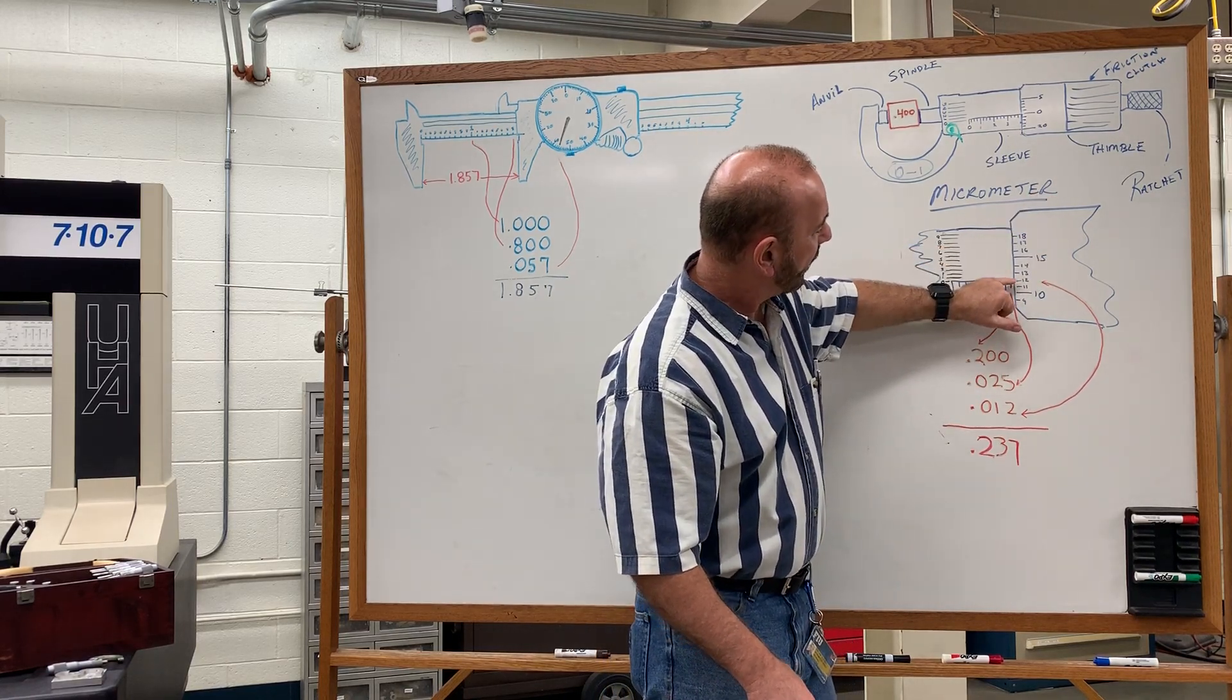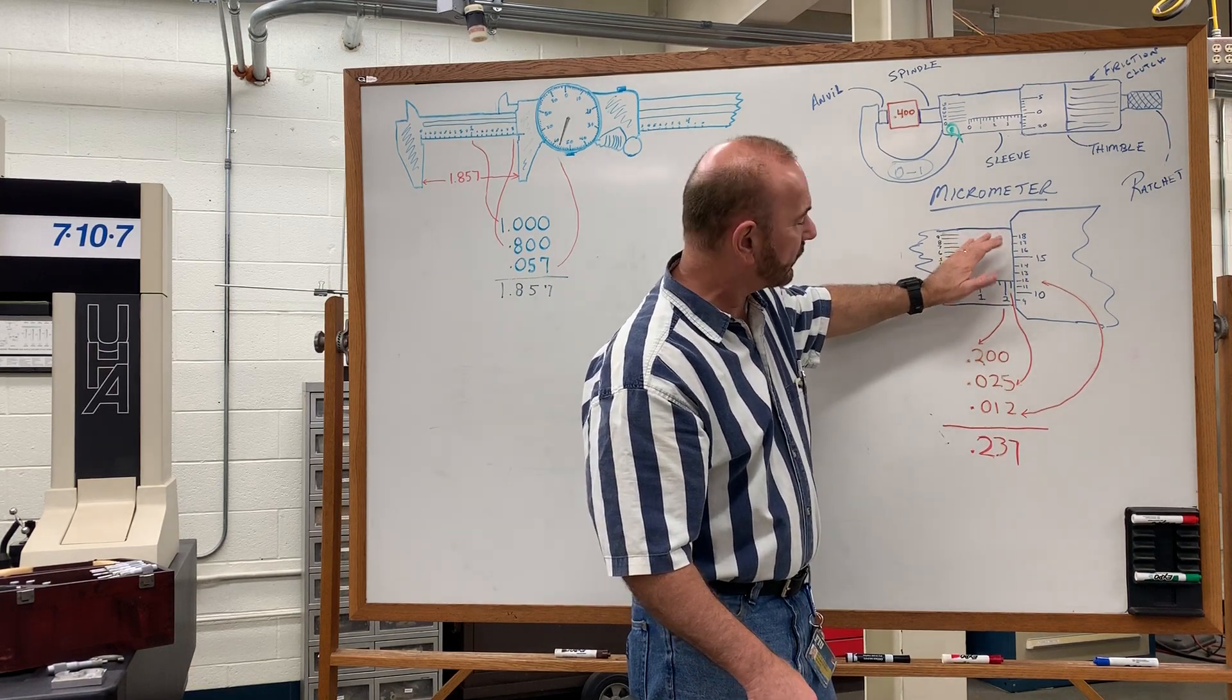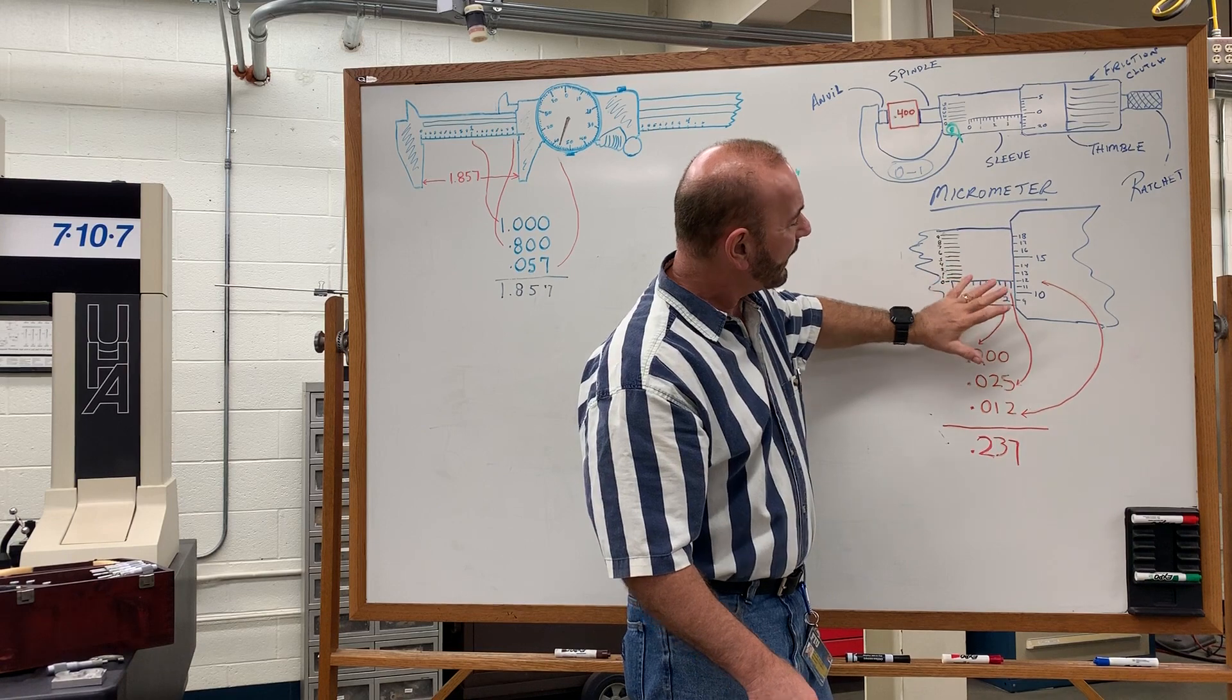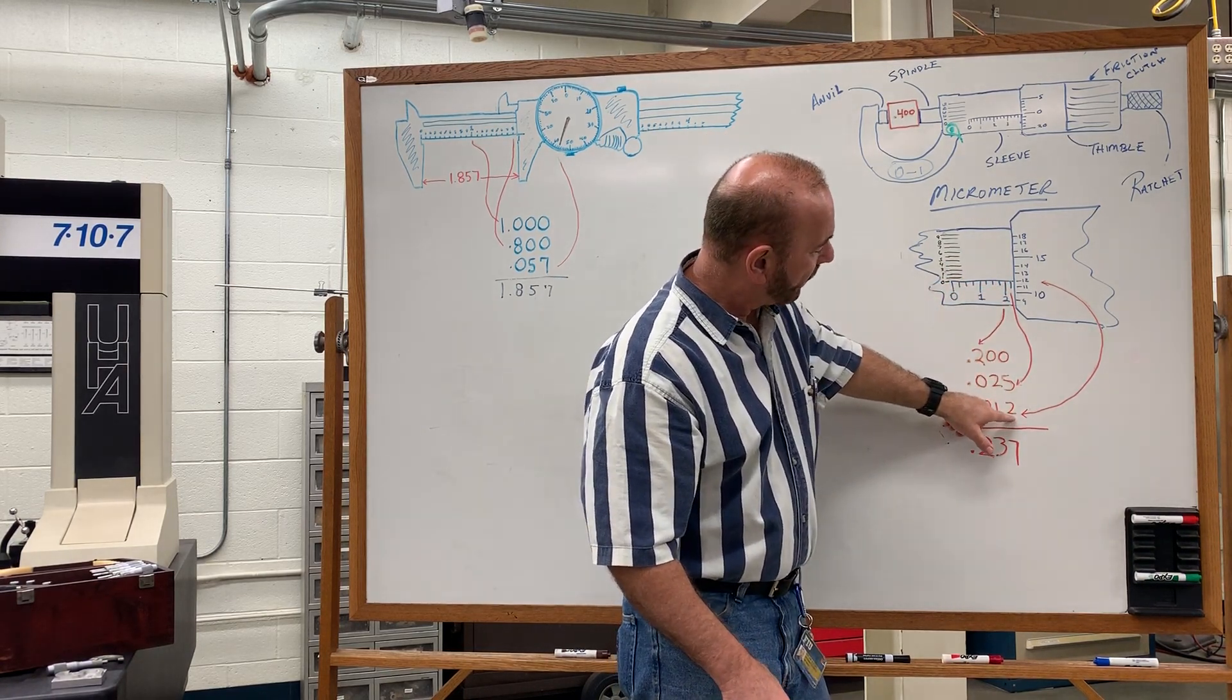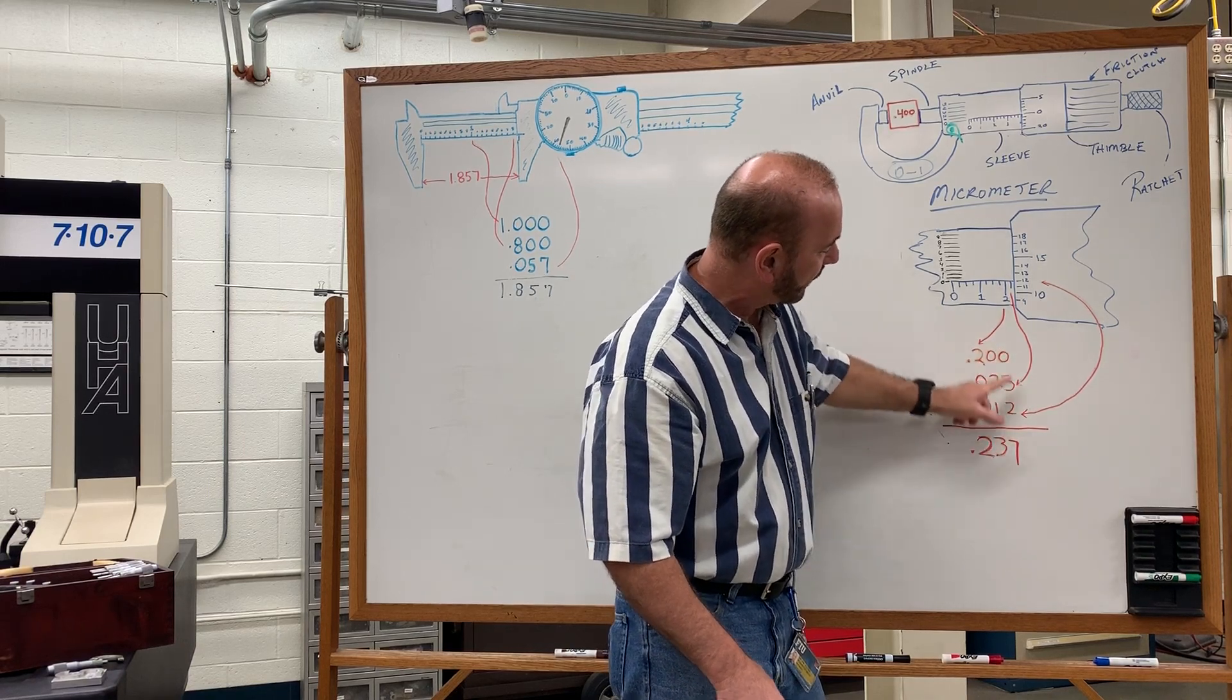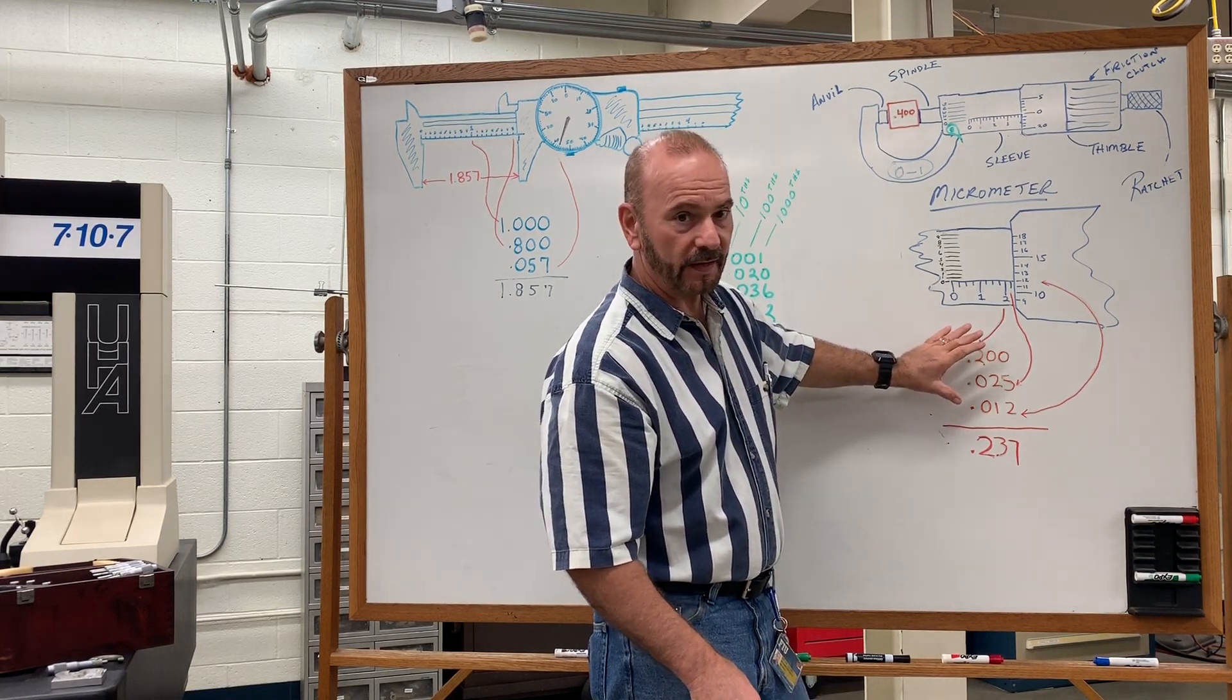And then on the thimble portion of it, I have 12 thousandths lining up, and sometimes it could be off by just a hair or two. It's in between the 12 and the 13, or the 11 and the 12. In this case, we're rounding to the third place decimal. So I would put the 12 thousandths getting that two to the third place by adding zero in front of it. Then you just simply add them up vertically, bring down your decimal point, and this value reads 0.237.